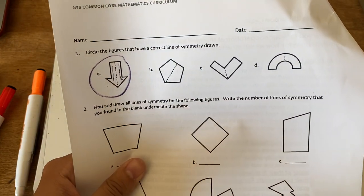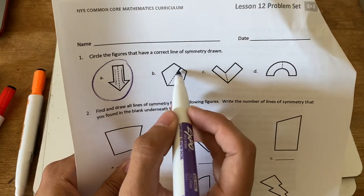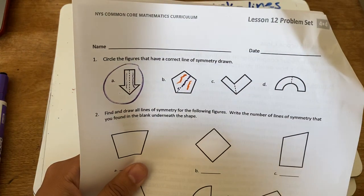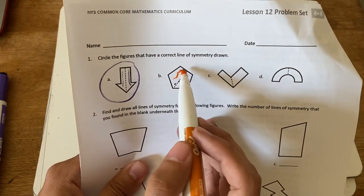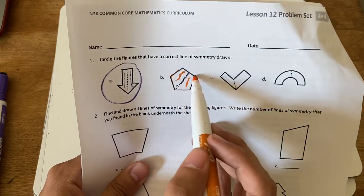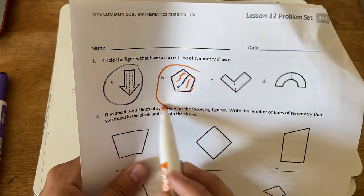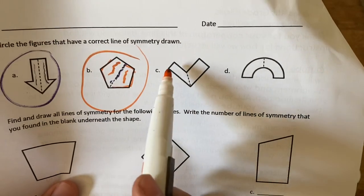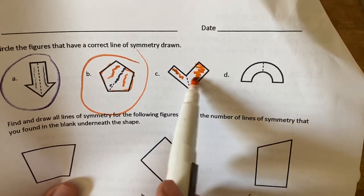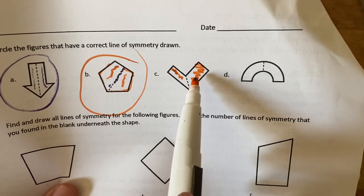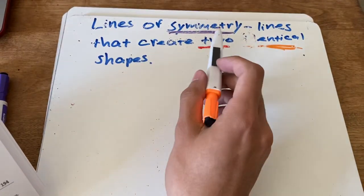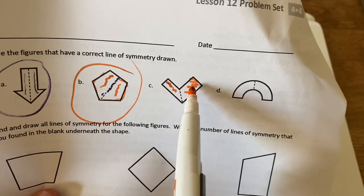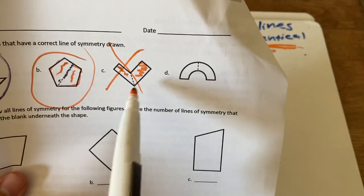For part B, the line of symmetry they drew — is this side of the shape the same as the other side? Yes, it is symmetrical, so the line of symmetry is correct. For part C, is this side the same as the other side? No — one is a bigger rectangle than the other. Our definition says lines of symmetry create two identical shapes, and these sides are not identical, so this line of symmetry is not correct.